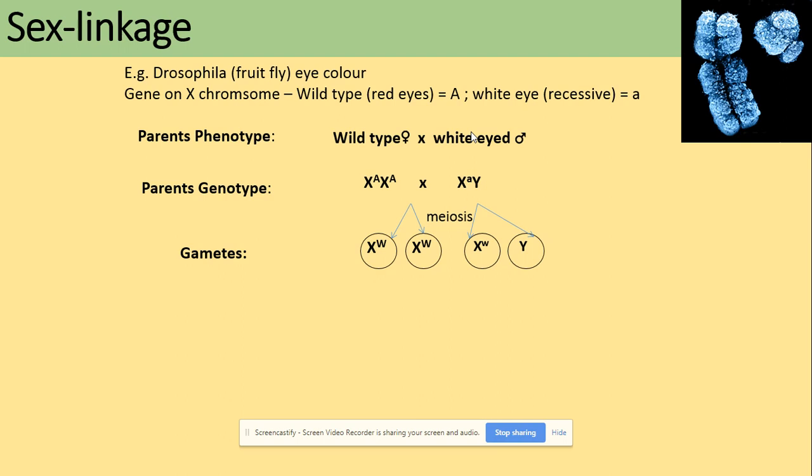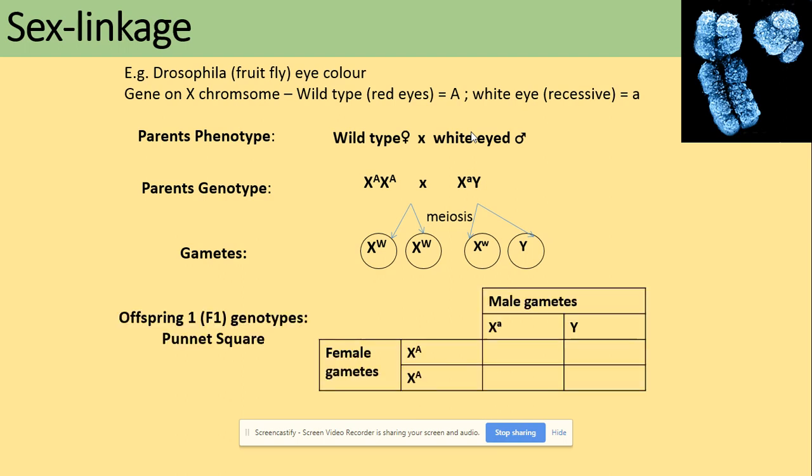What we're going to get in our offspring - we're doing a Punnett square. We're using the gametes that we worked out, putting gametes from one parent on one side and from the other parent on the other side, and we're working out our offspring.